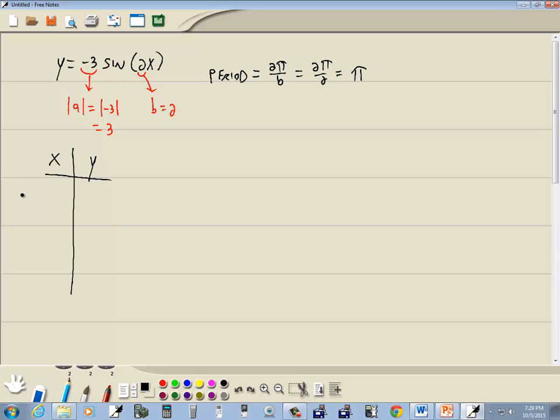Now we're going to build our t-chart. We start with 0. The very bottom down here is our period, which is π. Halfway is half of our period, which is 1 half times π, or π over 2.